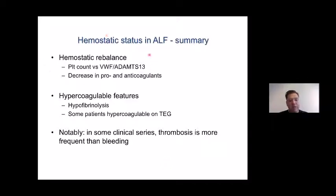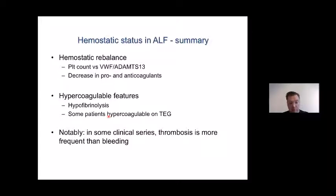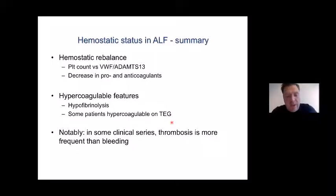In ALF, there is evidence of hemostatic rebalance: low platelet count versus high von Willebrand factor, a simultaneous decrease in both pro- and anticoagulants giving normal thrombin generation. But ALF also has hypercoagulable features, including defects in clot breakdown, and on TEG you see that patients may be hypercoagulable. In some clinical series, thrombosis is more frequent than bleeding. ALF definitely is not an overt bleeding disorder, but may have even thrombotic components. This has consequences for management of the hemostatic status.